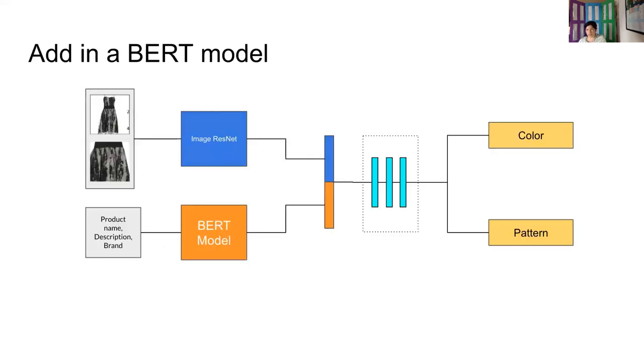So the specific model we ended up putting in for the text was a BERT model because Michael had experience with BERT models. So he had some existing code we could work off of. So we still took in that same full image and cropped image and sent it through a ResNet. At the same time, we were sending through the product text through a BERT model. In both of these cases, we get some output vector, then we send them through the dense layers and then out again to the color and pattern task heads. So I knew what I was supposed to be doing. Now I just had to get it implemented in code.